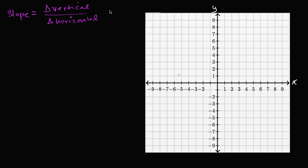If we're looking at the xy-plane here, our change in the vertical direction is going to be a change in the y variable, divided by change in the horizontal direction, which is going to be a change in the x variable. So let's see why that is a good definition for slope.